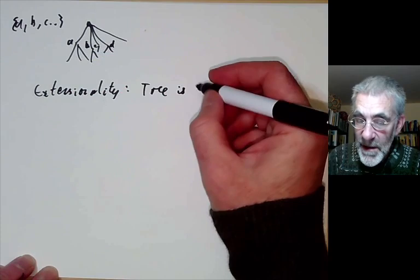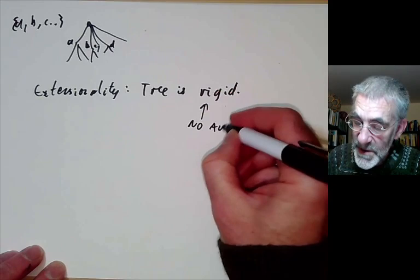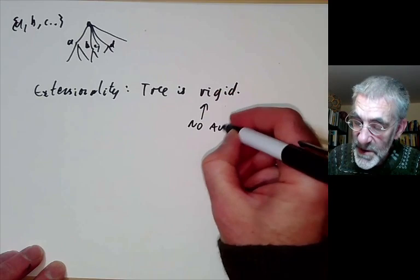And then what extensionality says, says that this tree is rigid, at least if it's well-founded. So we'll be discussing well-foundedness later. So what this means, it has no automorphisms. I should point out this tree is actually a rooted tree.